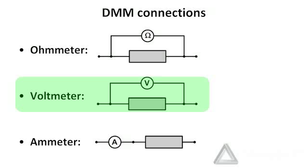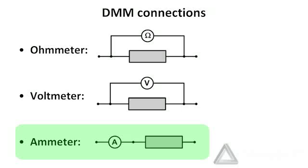The same connections are used with the DMM as a voltmeter. The two terminals of the DMM are connected across the terminals of the device whose voltage difference is being measured. The difference is that when the DMM is being used as an ammeter, the DMM is placed in what is called series with the circuit element.